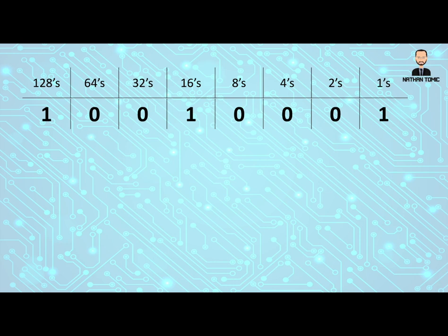If I start with the place values, I've got my ones, twos, fours, eights, sixteens, 32, 64 and 128. I can start working out what my decimal equivalent to this would be in the same way.